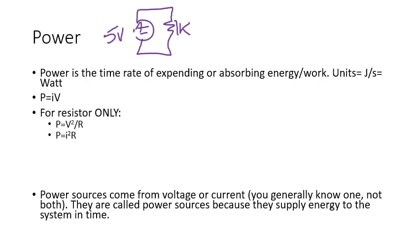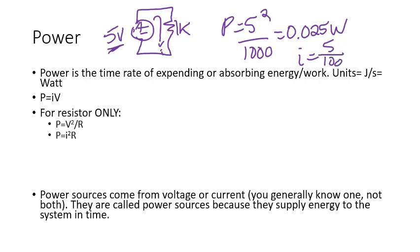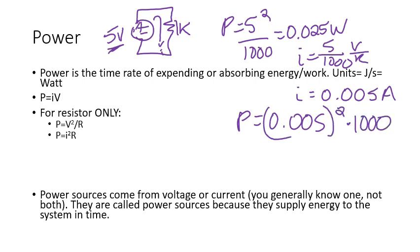Well, I could do it from any of my equations here. I already know the voltage drop across it is five volts in this case. So I could say power equals five squared over a thousand, and that gets me 0.025 watts. Or I could find the current through the resistor. That current has to be my five volts over a thousand, so that current comes out to be 0.005 amps. And then my power equals 0.005 squared times a thousand. That also equals 0.025 watts.